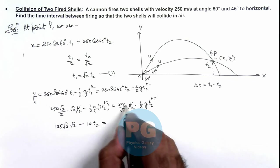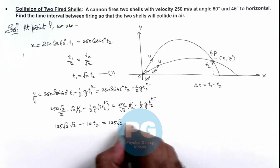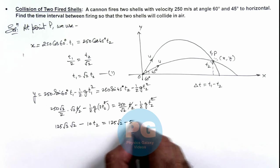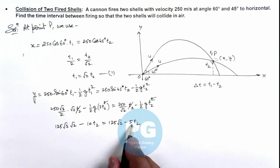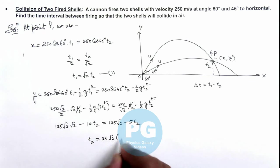This equals, this can be further written as 125√2 minus 5t₂. So on further simplifying this will become 5t₂, or t₂ = 25√2(√3 - 1) seconds.